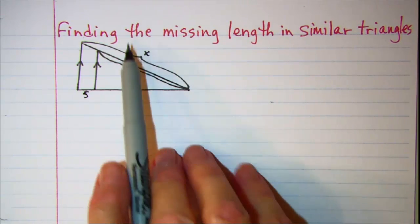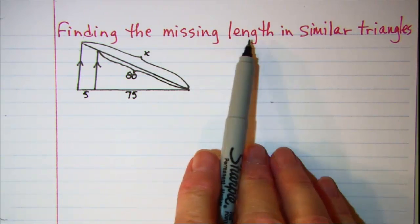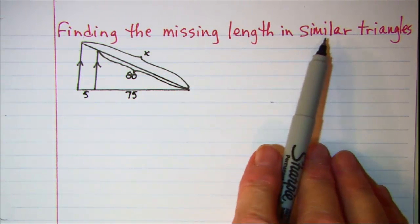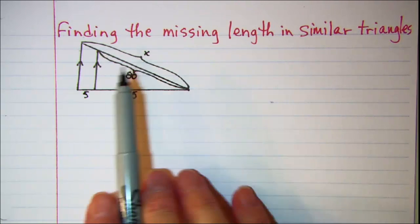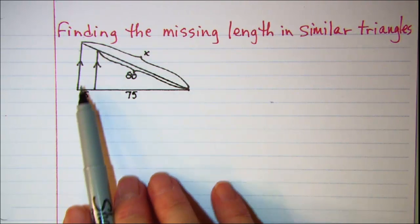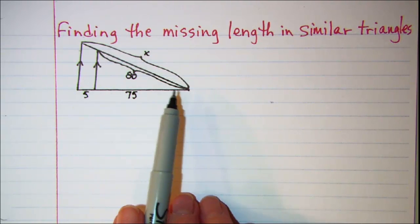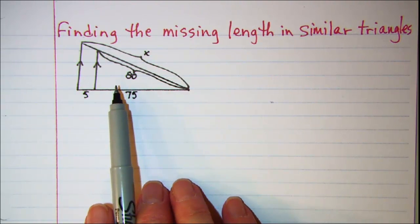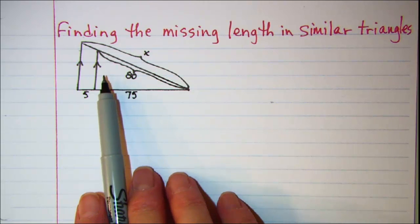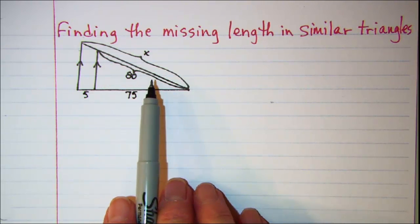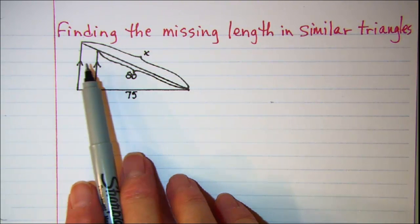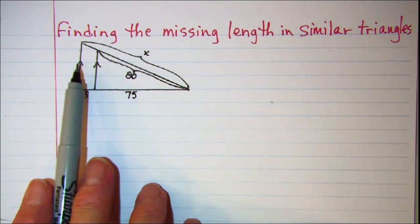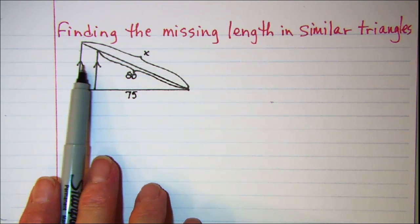In this video we'll be finding the missing length in similar triangles. Here we see a diagram with two triangles nested one inside of the other, and we have parallel lines here.